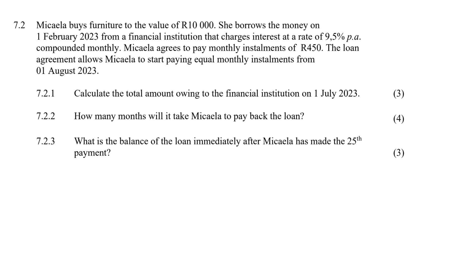Makayla buys furniture to the value of 10,000 Rand. She borrows the money on 1 February from a financial institution that charges 9.5% interest compounded monthly. Makayla agrees to pay monthly installments of 450 Rand. The loan allows her to start paying equal monthly installments from 1 August. Calculate the total amount owing to the financial institution on 1 July.